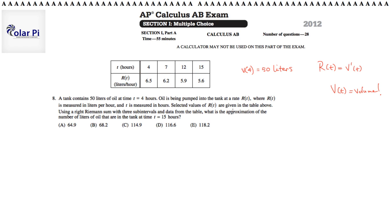Using a right Riemann sum with three sub-intervals and the data from the table, what is the approximation of the number of liters of oil that are in the tank at time t equals 15? That is to say, find V(t) at time t equals 15, find the volume of oil at time t equals 15 hours.